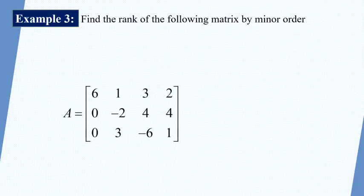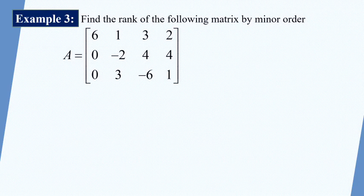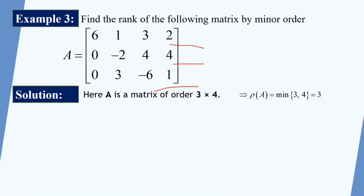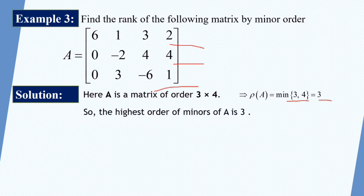Example 3: find the rank of the following matrix by the minor method. A = [6, 1, 3, 2; 0, −2, 4, 4; 0, 3, −6, 4; −6, 1]. Wait — this is a matrix of order 3 by 4. So rho A = minimum of 3 and 4 = 3. The highest order minor of A is 3. So the rank will be 3 or less than 3. We must formulate all possible 3 by 3 minors and find their values.